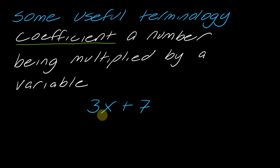So let's say I've got the expression 3x plus 7. The coefficient is the number being multiplied by a variable, so it would be this part right here. When there's a number attached to a letter, that's a coefficient. The x is the variable, and this number that's by itself not attached to a letter, that's called a constant.